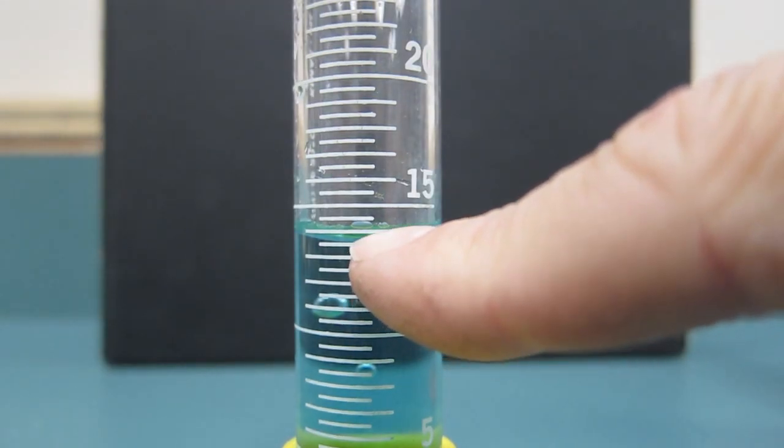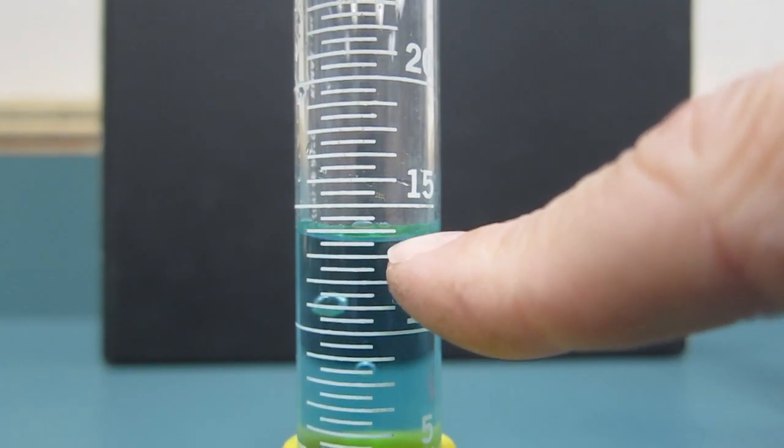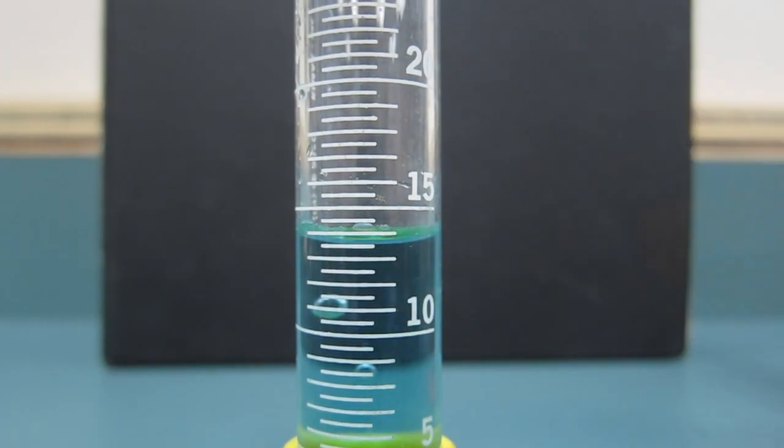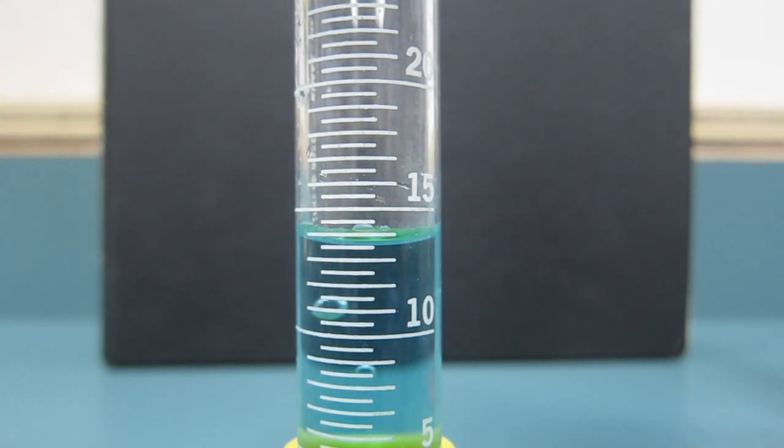Even though the water level comes up to that tick mark right here, I'm not reading from this one. I'm reading from the one below because that's the bottom of the meniscus. And then finally, the ones that we don't use quite as often in here are these two graduated cylinders.